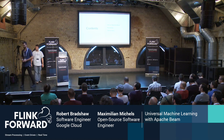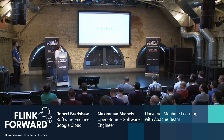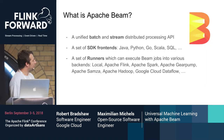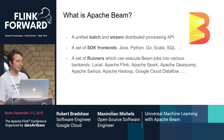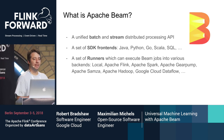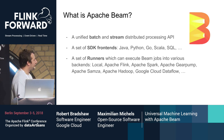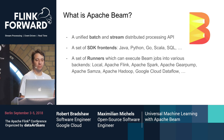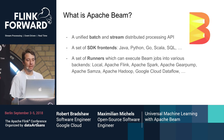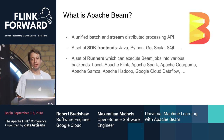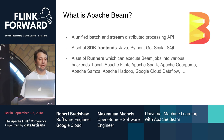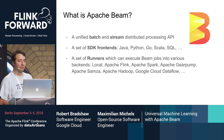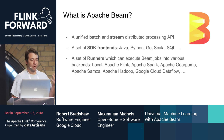Apache Beam is a unified batch and streaming distributed processing API, so you can write your pipeline once and then run it in batch or streaming mode. Beam provides a set of SDK front ends so you can write the pipeline in the language of your choosing — Java, Python, Go, Scala, or SQL — and it's extensible so you can write your own. This allows you to use the ecosystem and libraries you want to get your job done.